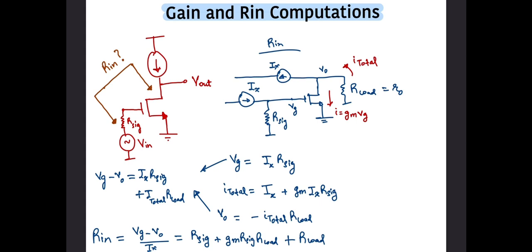One might also wonder, what if R_sig is assumed to be zero? Well, then there is no path for the current to flow, and thus the impedance across the gate and drain is infinite. However, that isn't of any physical significance, particularly moreover, actual voltage sources would have a non-zero series impedance associated with them.